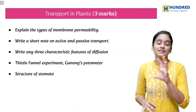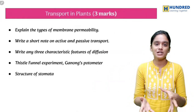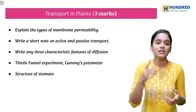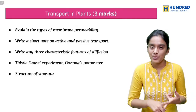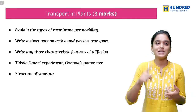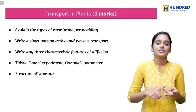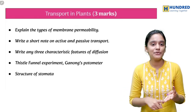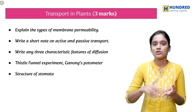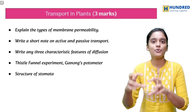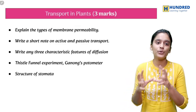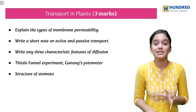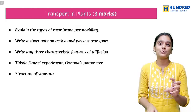Next, the important 3-mark questions from Transportation in Plants. These 5 questions are: different types of membrane permeability, active and passive transport, 3 characteristic features of diffusion, Thistle funnel experiment, and Ganong's photometer — which are very interesting. The structure of stomata along with the diagram is also very important to practice.